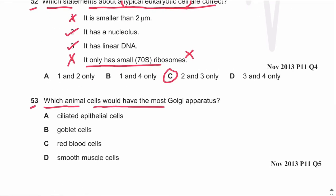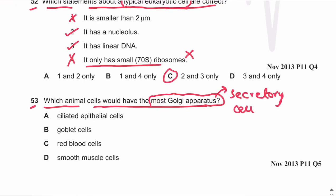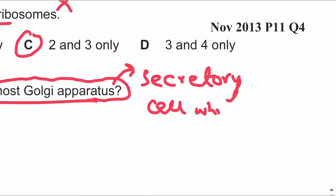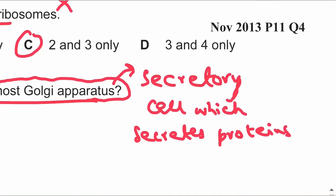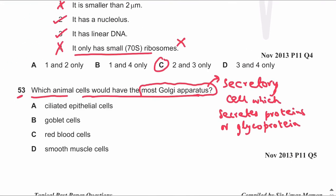MCQ number 53: which animal cells would have the most Golgi apparatus? A cell with the most Golgi apparatus is typically a secretory cell — one that secretes proteins or glycoproteins. The answer is B, the goblet cell, because goblet cells secrete mucus, which is made up of glycoproteins. Therefore goblet cells contain the most Golgi apparatus.